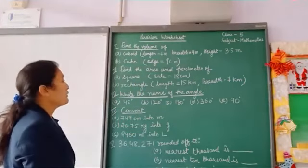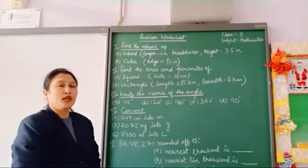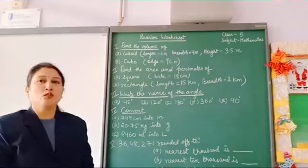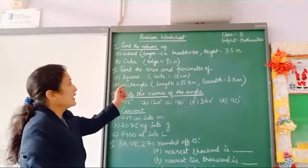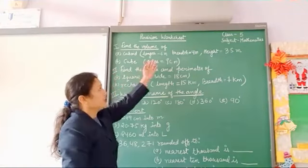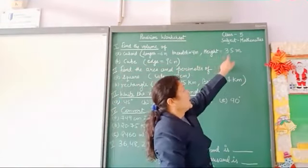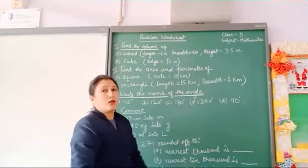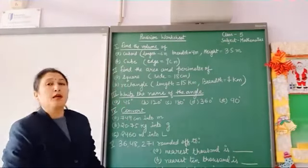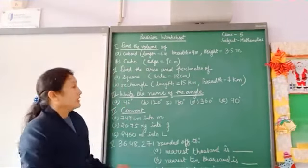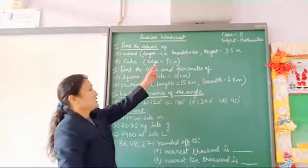Question number 1 is to find the volume. In part A we have to find the volume of a cuboid which has length 6 meters, breadth 5 meters, and height 3.5 meters. In part B we have a cube and we have to find its volume as well. The edge is 9 centimeters.